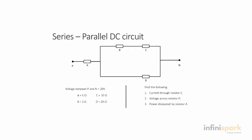In this video, I will solve a series parallel circuit. The question says that the voltage between P and N terminals is 20 volts, resistance of A is 5 ohms, resistance of B is 2 ohms, resistance of C is 10 ohms, and D is 20 ohms. We're trying to find the current through resistor C, the voltage across resistor D, and the power dissipated by resistor A.